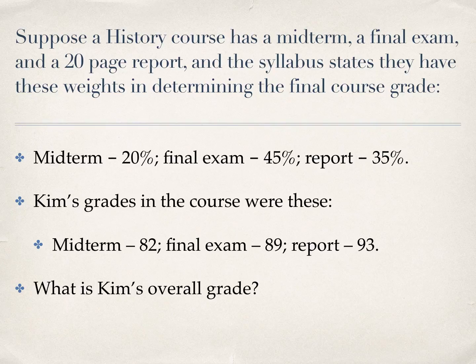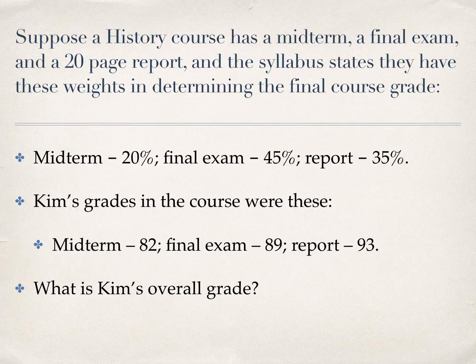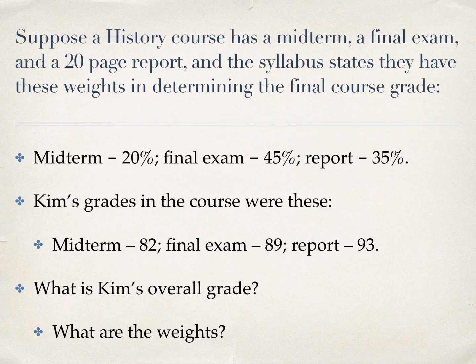If Kim's grades in the course were 82, 89, and 93, what is Kim's overall grade? It's not going to be 82 plus 89 plus 93 divided by 3 — that would be the mean of those three numbers, but here each number is weighed differently. The weights in this case are the percentages, and we regard them as decimals.